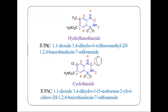Similarly, the next example is hydroflumethiazide. The difference here is that at position 6 there is a CF₃ (trifluoromethyl) group instead of chloro. The name is: 1,1-dioxo (or 1,1-dioxide), 3,4-dihydro, 6-trifluoromethyl-2H-1,2,4-benzothiadiazine-7-sulfonamide.